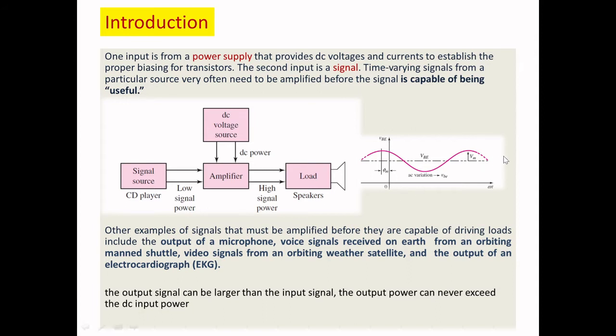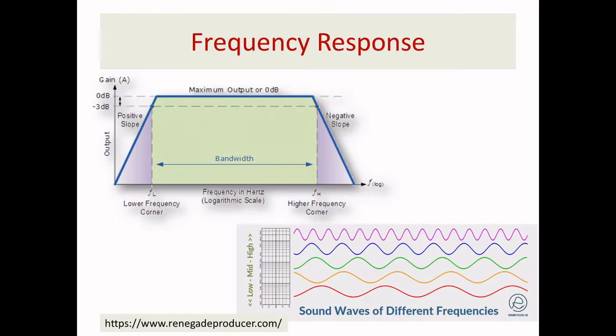This block is used in many applications like electrocardiographs and orbiting weather satellites. To understand the amplifier, you need to understand the frequency response, which is determined by three regions: low, mid, and high frequency. The capacitor offers different impedance with respect to frequency. In the mid-frequency band, the gain is saturated.